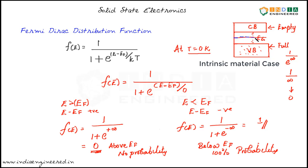The Fermi level Ef lies almost in the middle of the energy gap. We will discuss the slight offset in a later video. Now let's plot the Fermi-Dirac distribution function for T equal to 0 Kelvin and see what happens as temperature increases.